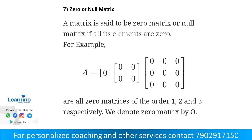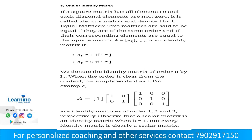The next one is zero or null matrix. A zero matrix is a null matrix in which all the entries or elements are zero. For example, A equals a matrix of all zeros. This is a zero matrix of order one, and this is a zero matrix of order two.